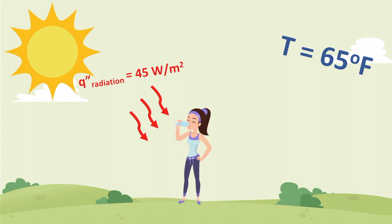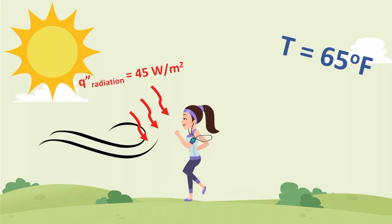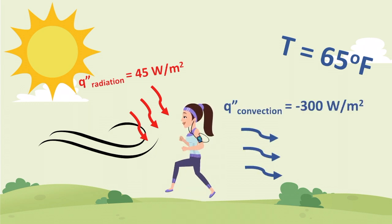You'll feel hotter in the direct sunlight than in the shade even though the ambient temperature is the same for both. Now let's introduce a breeze. This breeze acts as convective heat transfer that will pull heat away from your body and make you feel cooler.